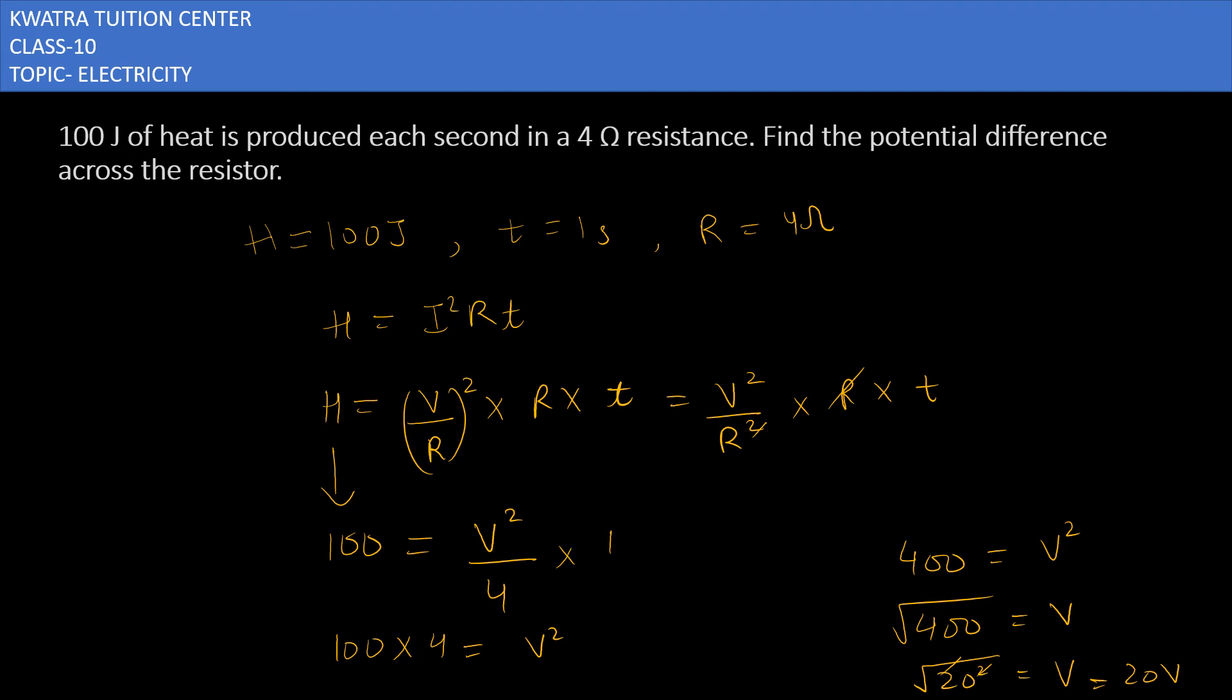That's it. Aapko yeh dhyan rakhna hai ki aapne kaunsa formula use karna hai. Ya iska dusra tarika bhi hai ki aap yahan se I ki value nikaal sakte hain. Aur uske baad V is equal to I R wala formula use kar sakte hain. Nahi toh you can substitute the value of I which is V over R.